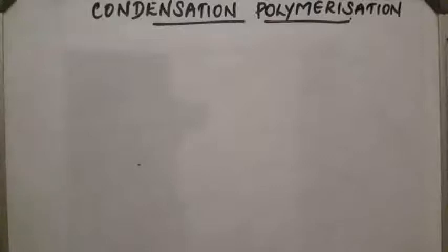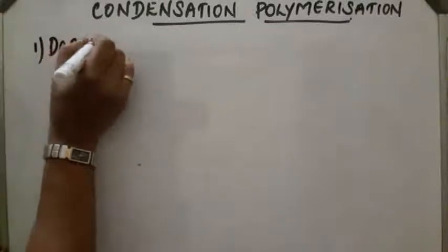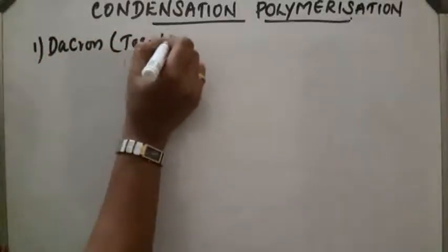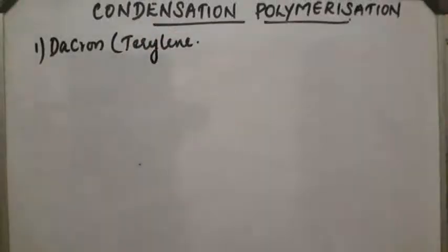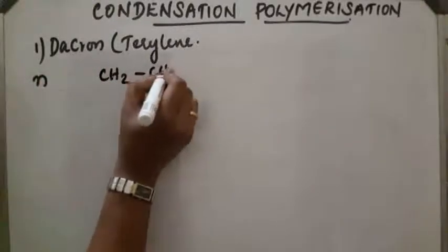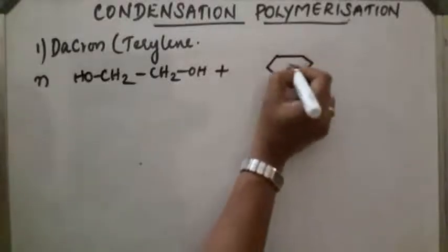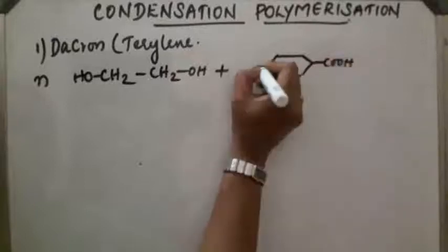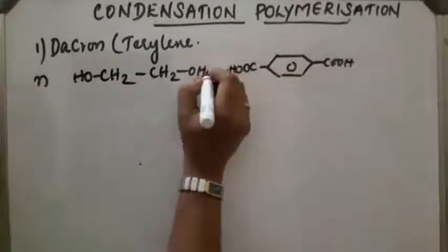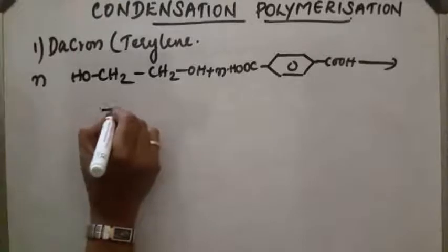Now we are discussing some examples for condensation polymers. The first category is polyesters. The first example is Dacron or Terylene. This can be obtained from a diol called ethylene glycol, CH2OH, on reaction with terephthalic acid. This terephthalic acid polymerizes N times. A water molecule is removed and the product obtained is Dacron.